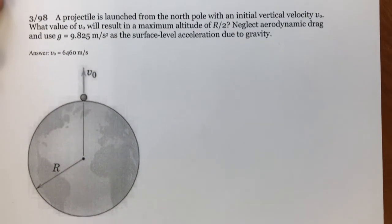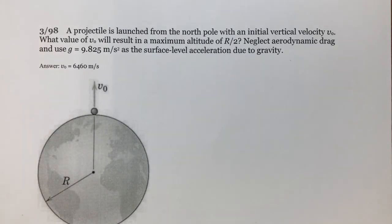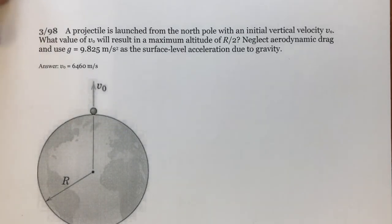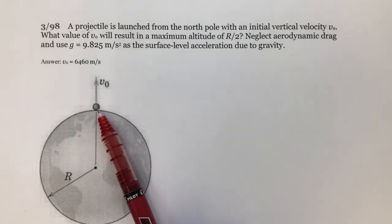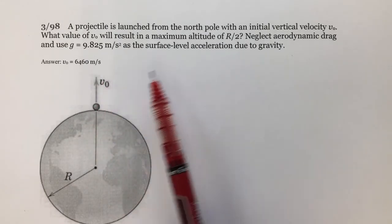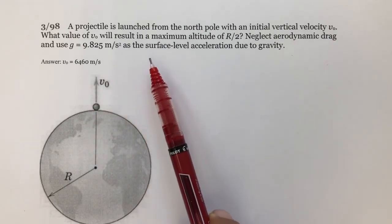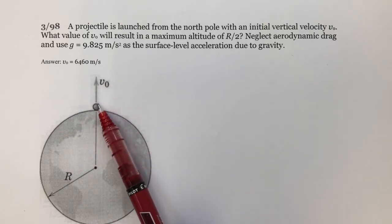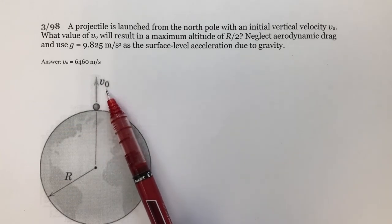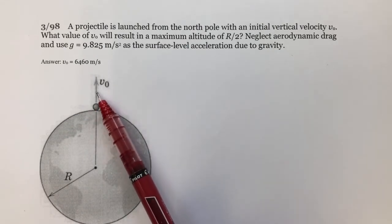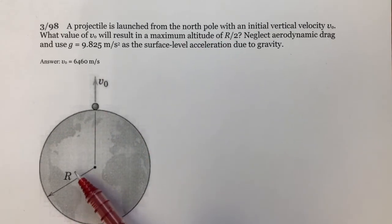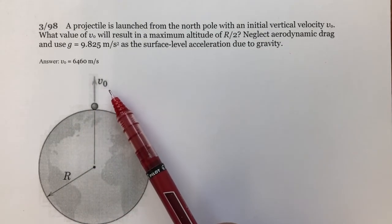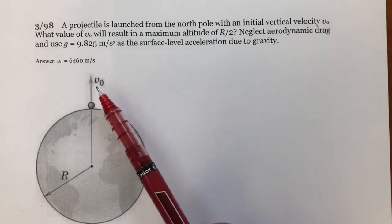For the second example, we use the gravitational potential energy equation for masses far from the earth. In this problem, a projectile is launched from the surface of the earth with an initial velocity v0 (unknown). The question is: if after launching, the particle rises to an altitude of R/2 (where R is the radius of the earth), and neglecting aerodynamic drag forces, what initial velocity v0 is required?